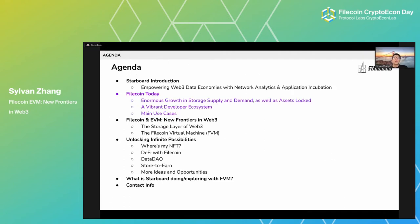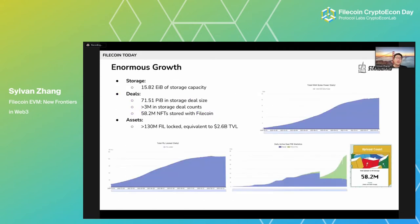We have been working in the Filecoin ecosystem for quite some time. What did we find? First, Filecoin is enormous. It has around 16 exabytes of storage capacity available. To put that into perspective, if the recording of this talk were 16 exabytes, it means this talk would last about 3.8 million years — but I promise I won't keep you guys that long.